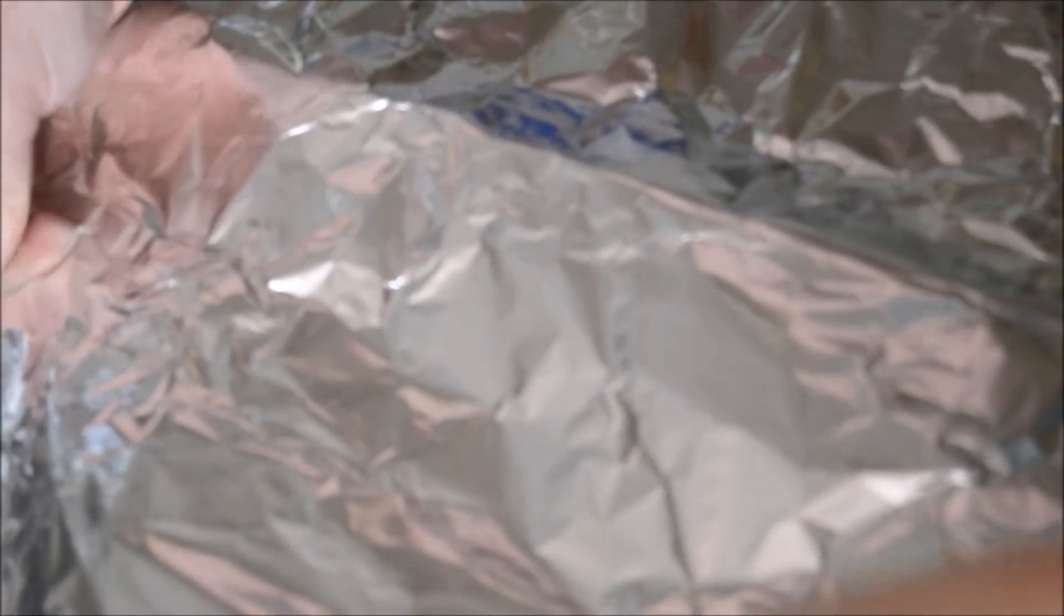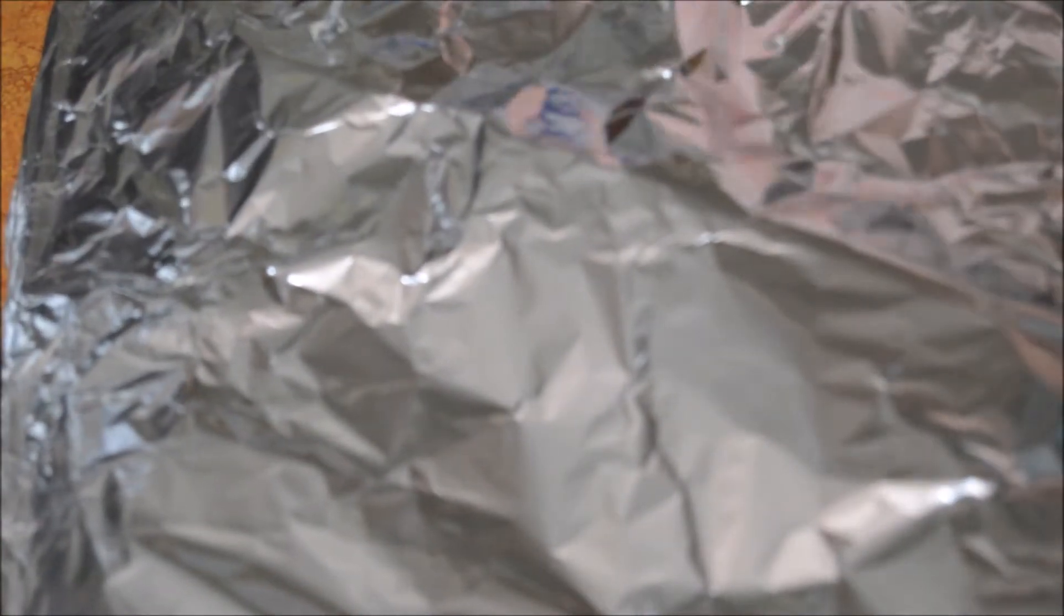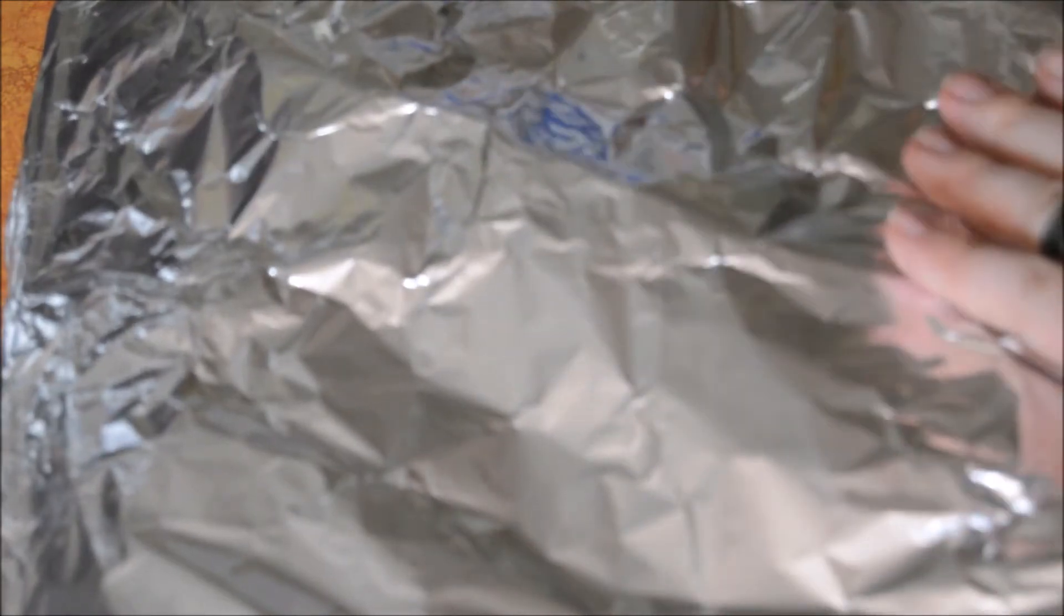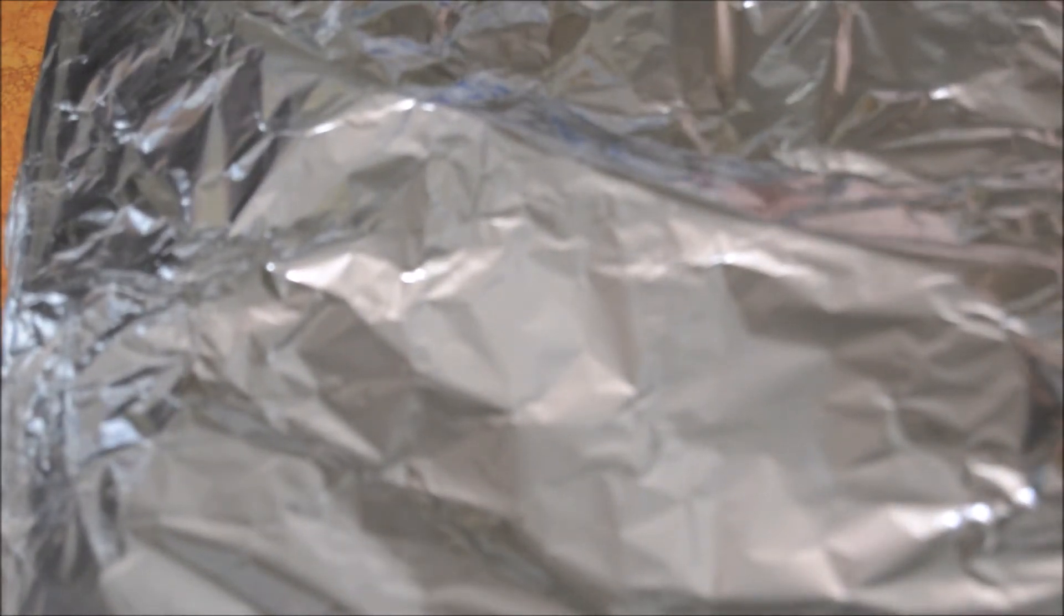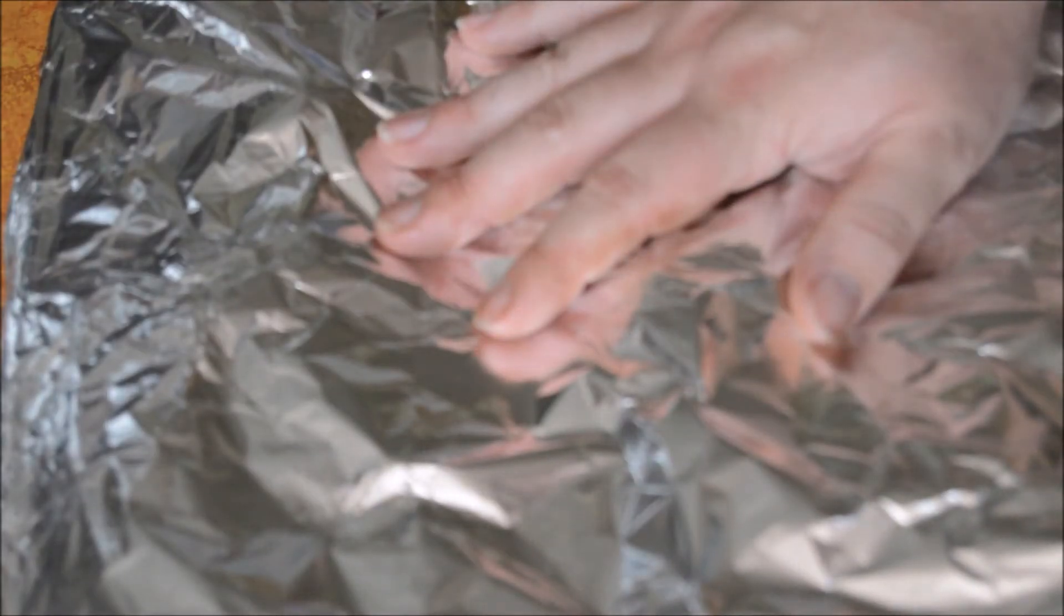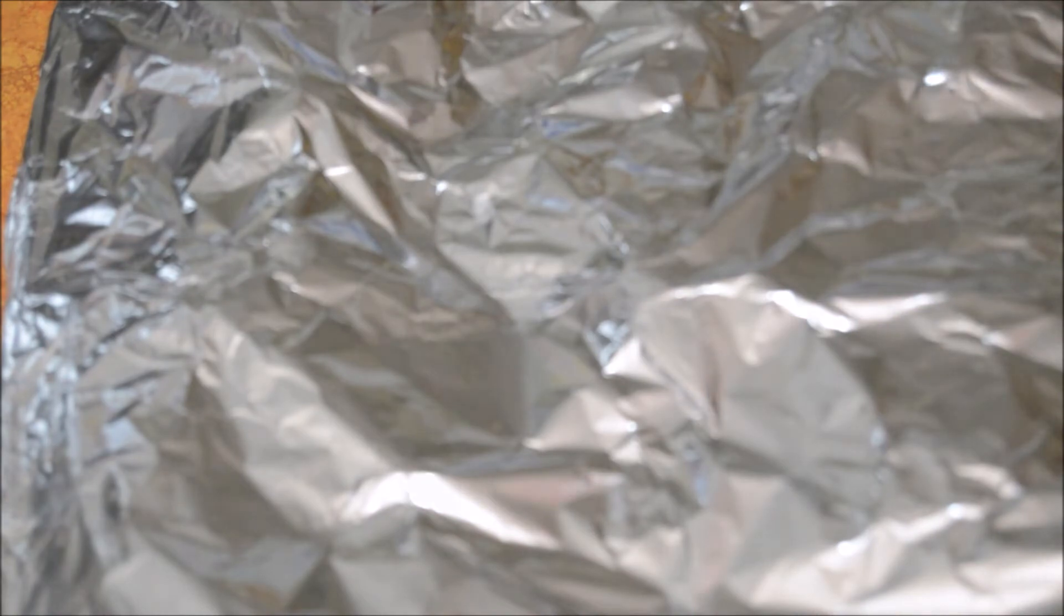So we're going to put this in a 350 to 400 degree oven for about an hour. It just depends on your area and your temperatures of the elevation, and you just kind of have to see how your oven does. I'll probably put mine on about 375 for an hour, and then you set them out, and I'll show you the next step when it's finished.